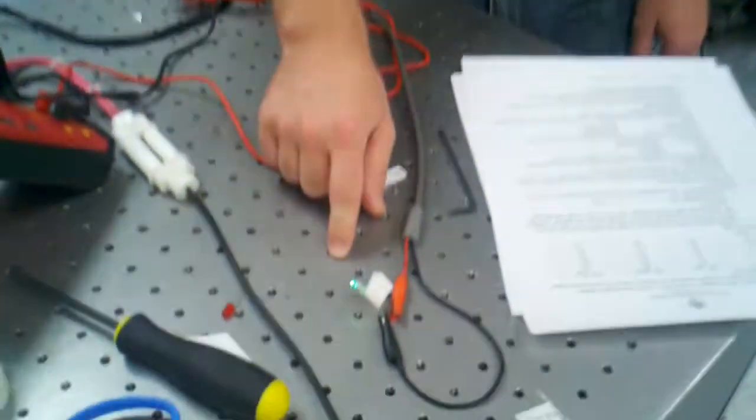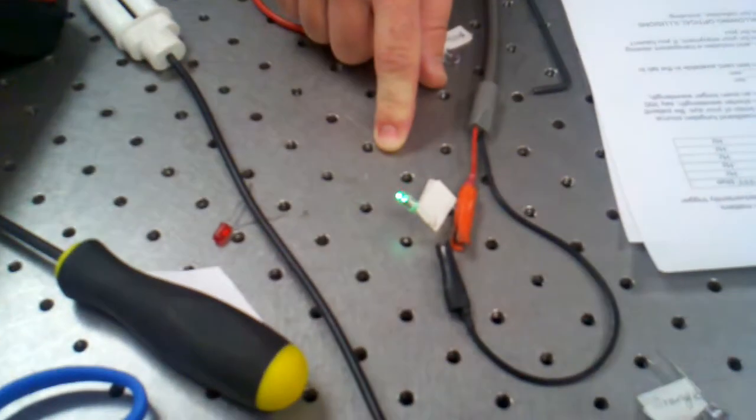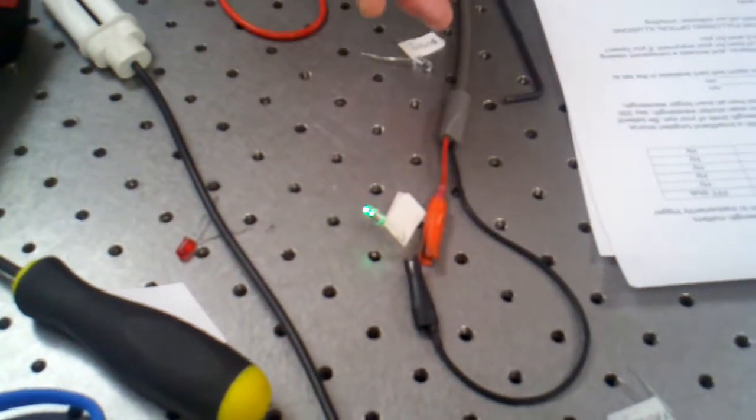One other interesting thing we noticed is that sometimes we could actually see the difference in the flickering off a reflection off of the silver optical bench, but we couldn't see it directly in the LED itself, and that was an interesting phenomenon.